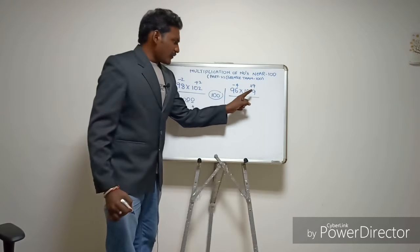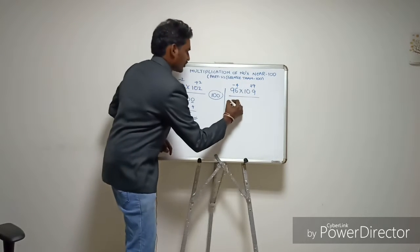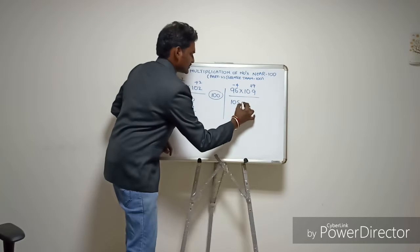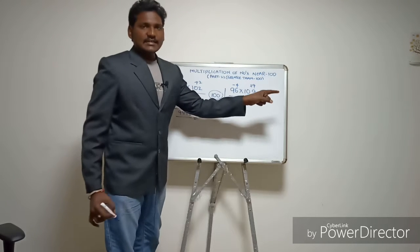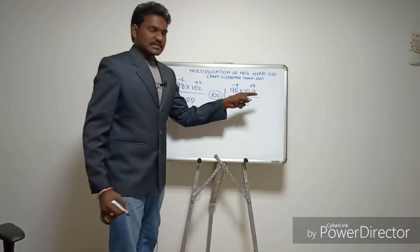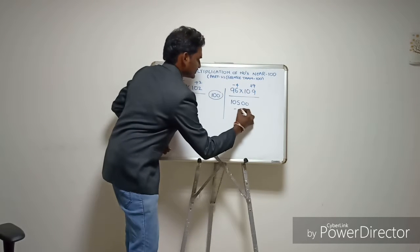Cross-adding: 96 plus 9 equals 105, or 109 minus 4 equals 105. Then multiply the differences: minus 4 times plus 9 equals minus 36.